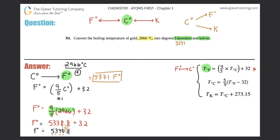Now we convert Celsius to Kelvin. We use the formula Kelvin = Celsius + 273.15, because we want to solve for Kelvin and we have Celsius. This is straight addition, so remember the sig fig rules for addition: it's the least decimal places, not the least total sig figs. So: Kelvin = 2966 + 273.15.